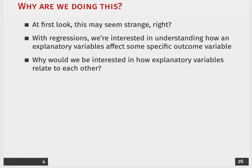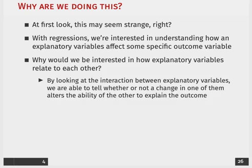Now, why would we be interested in how explanatory variables relate to each other? And the reason that we're going to do that is by looking at the interaction between age and party ID in our example, we'll be able to tell whether or not a change in one of them alters the ability of the other one to explain the outcome.